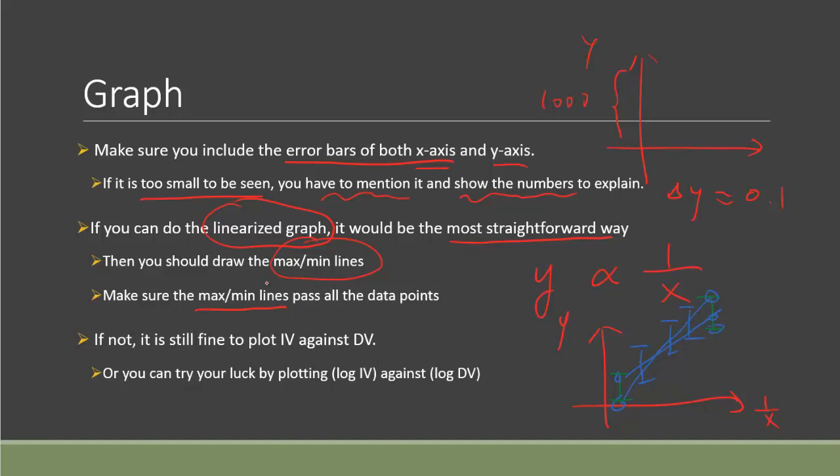So if it doesn't, then maybe you should adjust the point a bit higher or lower to make sure that the max/min line still pass through all the error bars of the other data points to validate the max/min line itself. So don't be simple minded and just simply pick the coordinate and find out.